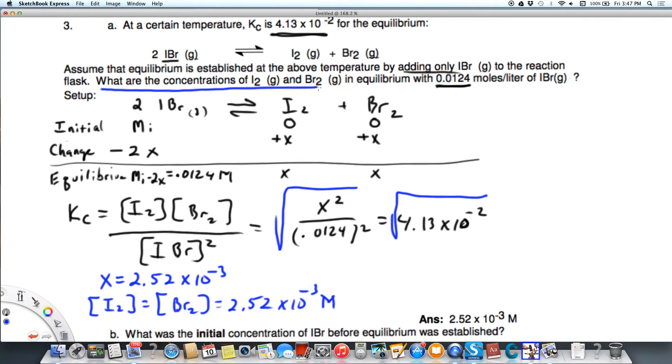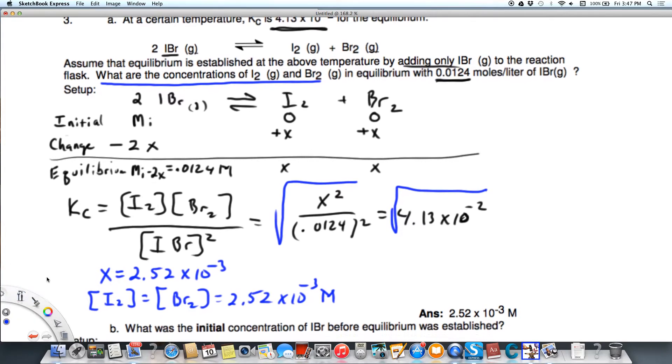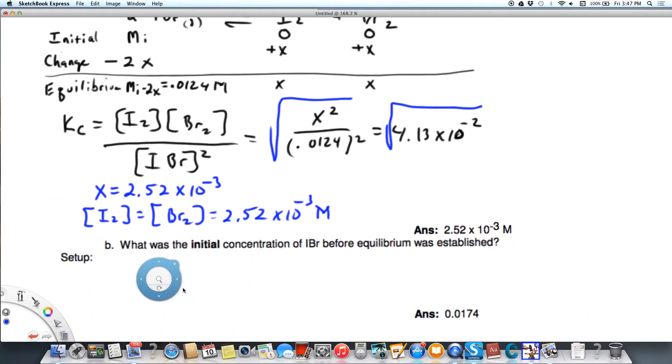But now we need to figure out what is the initial concentration of IBr. You will remember that we wrote our little equation, that the initial molarity, because we want to know what is the initial concentration. That's what we started off with. It's not zero because it says that there was some added.